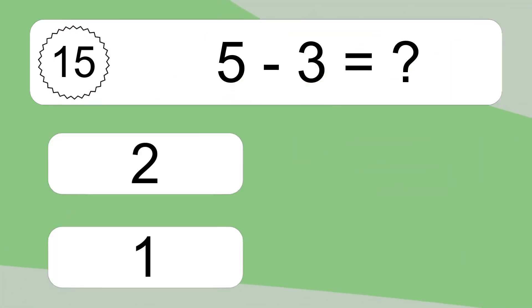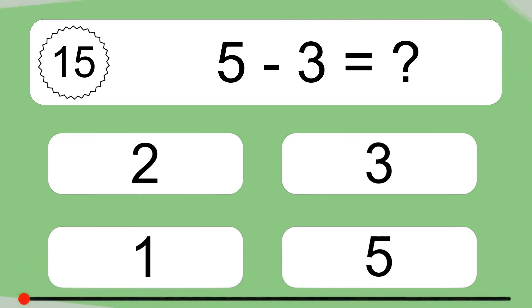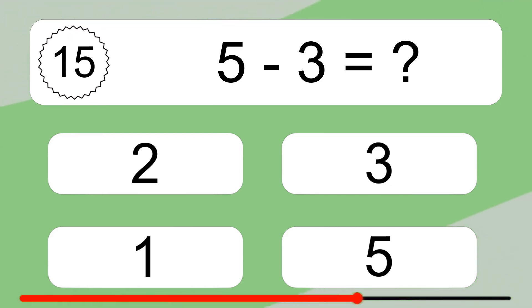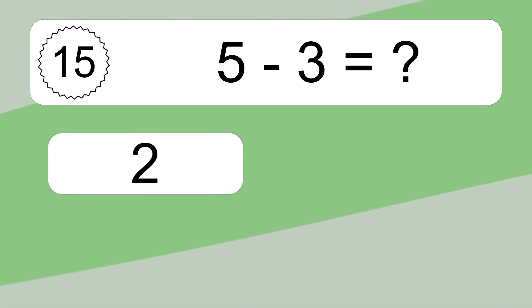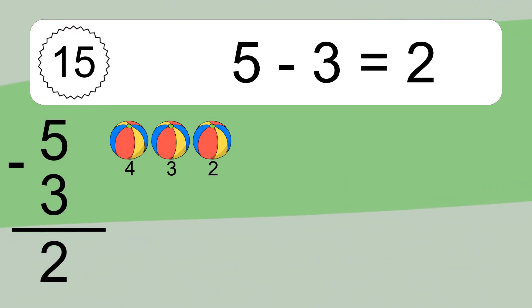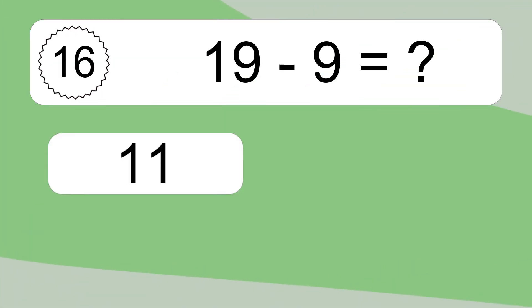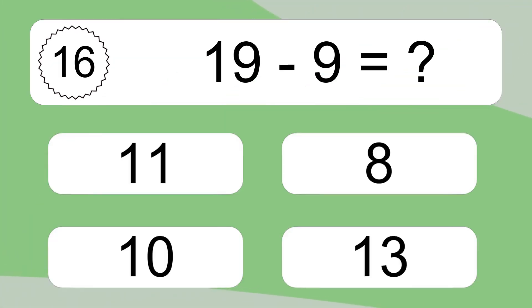5 minus 3 equals what? 5 minus 3 equals 2. Let's count it: 4, 3, 2. 19 minus 9 equals what?